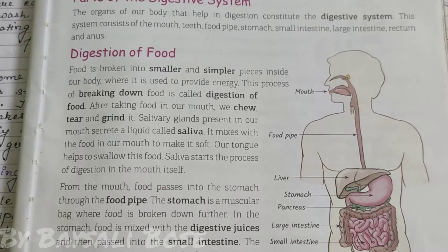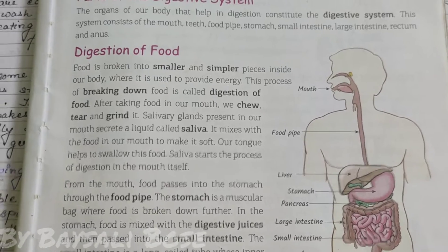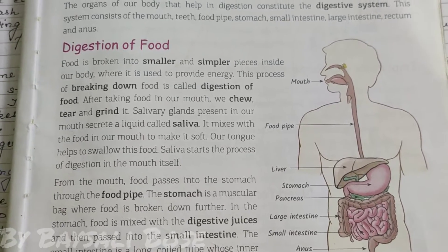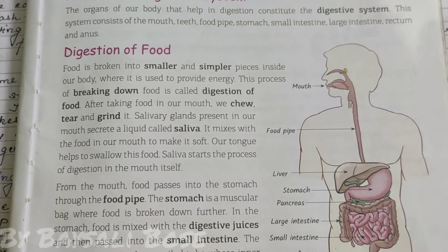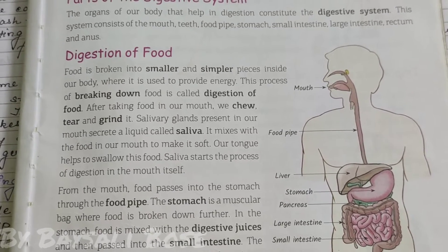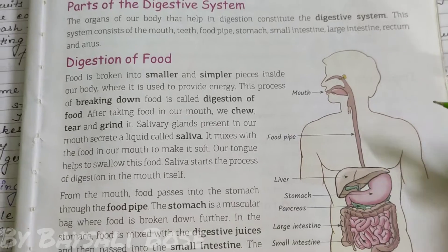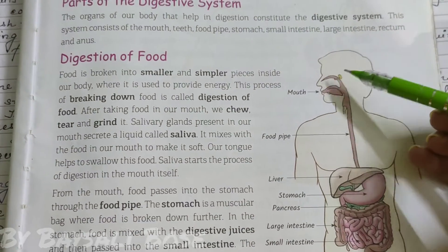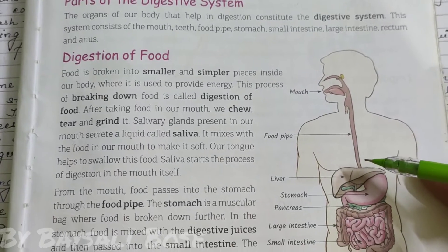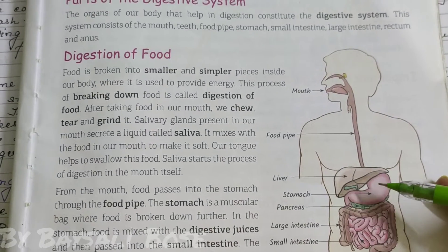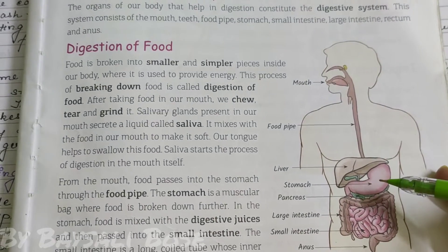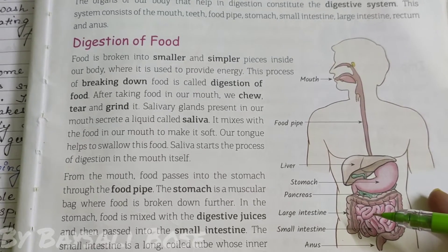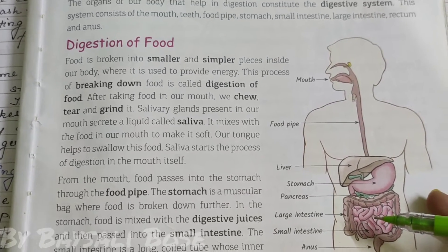For digestion, where does it start? It starts from the mouth and ends in the anus. The different parts of the digestive system are mouth, teeth, food pipe, stomach, small intestine, large intestine, rectum and anus.